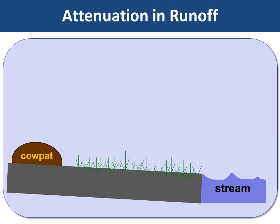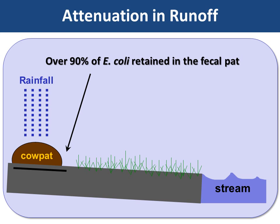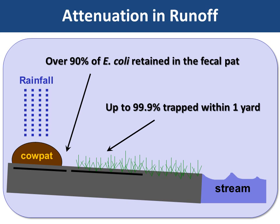If we move that fecal pat back away from the stream using some distribution tool, that allows the attenuation process to function. We find that over 90% — oftentimes more like 99% — looking at E. coli in this case, but C. parvum or salmonella function the same way: almost 90% is retained right in the fecal pat to begin with. So even if we can get cattle not standing in the creek and just a meter or half meter away, we've got a 90% reduction. For each additional yard or meter, an additional 99.99% is trapped within one yard. Huge reductions occur with very short distances.